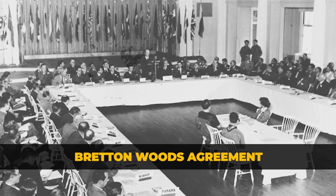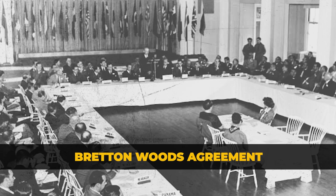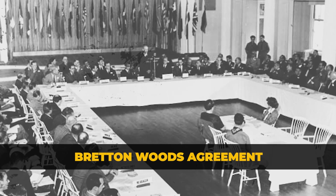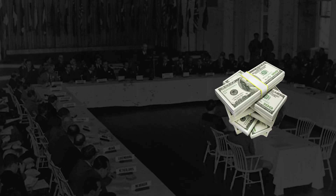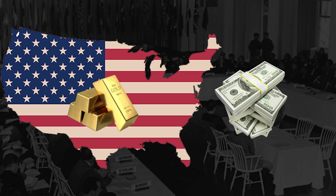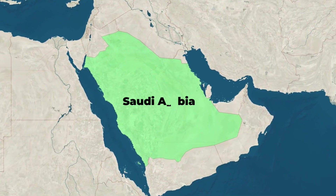In 1944, 44 countries from around the world came together and agreed that they would conduct global trade in US dollars. They pegged their currencies to the US dollar, and the US dollar in turn was pegged to gold. This meant that if any country had excess US dollars it no longer wanted to hold, it could exchange them with the US government and get gold in return — a win-win situation for everybody.